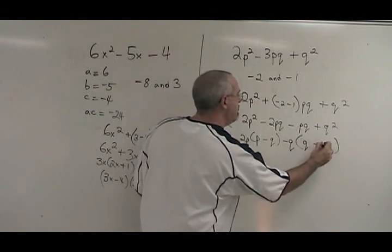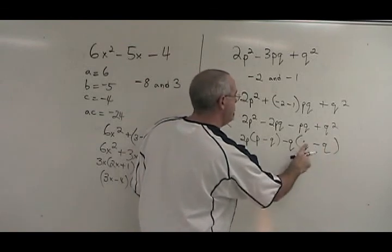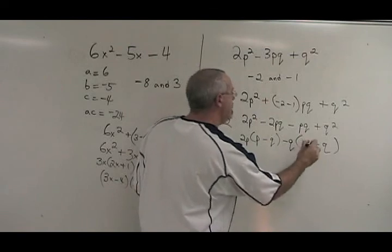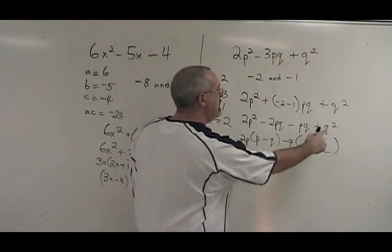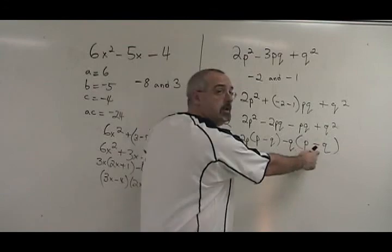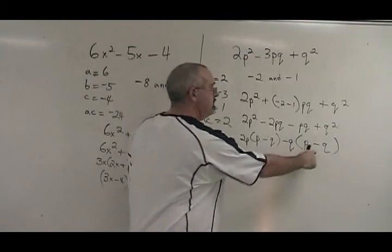First and negative second. Sorry. That's a p. Negative pq divided by negative q is a positive p. q squared divided by negative q is negative q. We have p minus q inside both brackets.